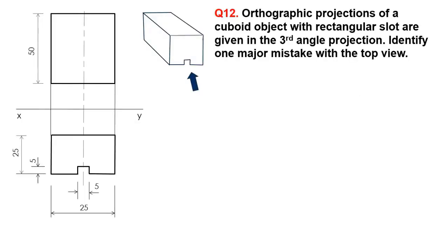Orthographic projections of a cuboid object with a rectangular slot are given in the third angle projection. Identify one major mistake with the top view. Please write your answer in a few words.